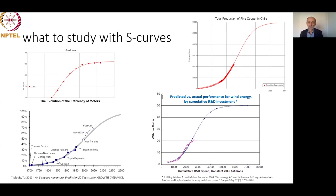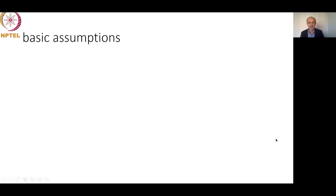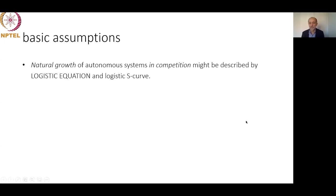What are the basic assumptions on which the logistic S-curve is based — making it so generic? The first assumption is that the natural growth of an autonomous system in competition may be described by the logistic equation and S-curve. Whatever system we take, it always grows in competition — for resources of water, land, air, or a market niche of clients.